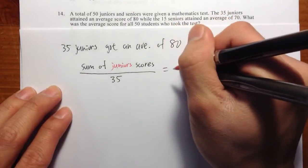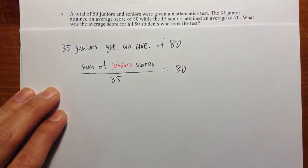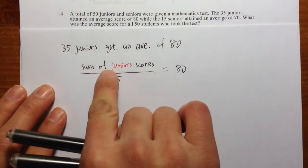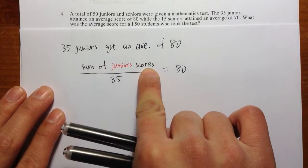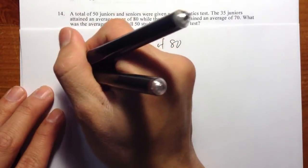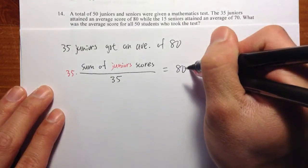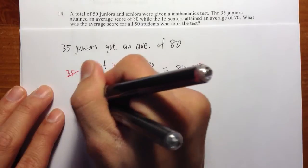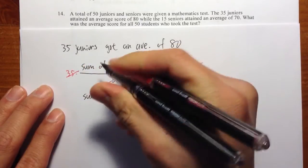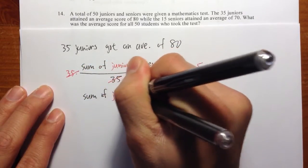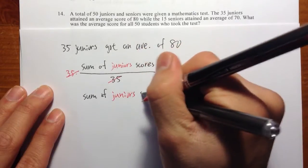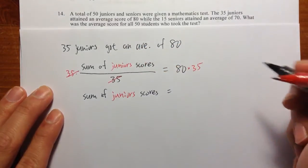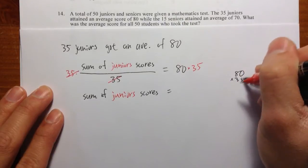If you take that, divide by how many people took the test, you will get 80, because that's the average. So again, I want to figure out what's the sum of the juniors' test scores. We can just multiply both sides by 35, then cancel out. So the sum of the juniors' test scores is 80 times 35.